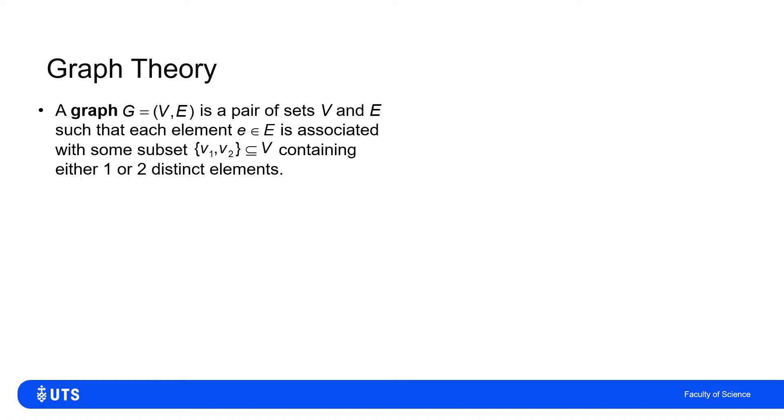And then the set E contains subsets of V, which have either one element of V or two distinct elements of V.